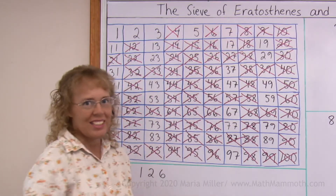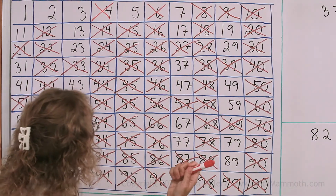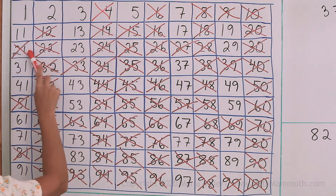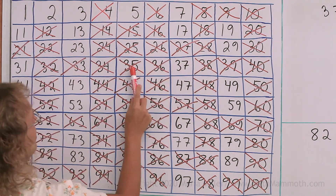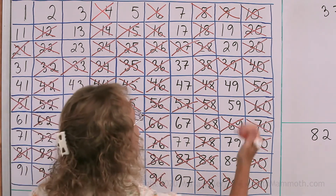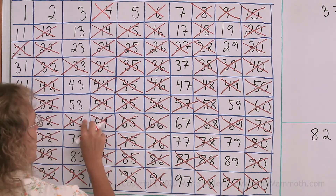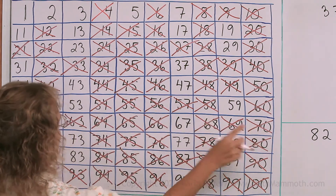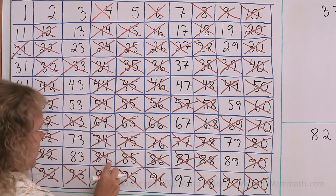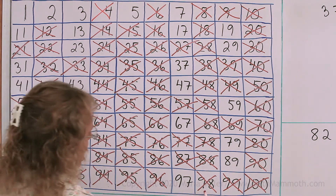Then I leave 7 — it is prime — but I cross out all the multiples of 7: 14, 21, 28, 35, 42, 49, 56, 63, 70, 77, 84, 91, and 98.